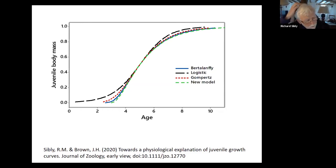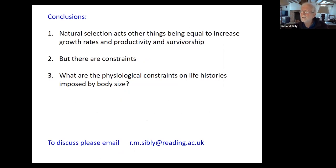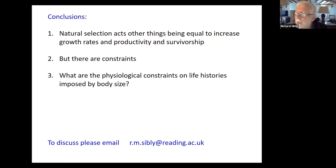If only we had an explanation of mass to the three-quarters, that would give a satisfactory explanation of why growth slows as the animal approaches maturity. My conclusions are that other things being equal, selection acts to increase growth, productivity, or survivorship, but there are physiological constraints. There's been a huge amount of theoretical analysis since the West et al. paper, but nothing has achieved the conceptual simplicity that they had. Ultimately, that's what I would most like to be able to generate, because that would be intellectually the most satisfying type of explanation.